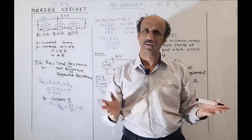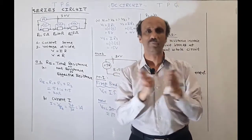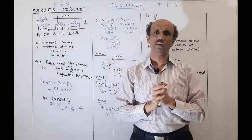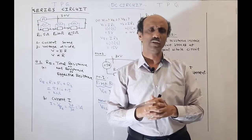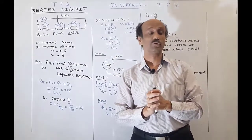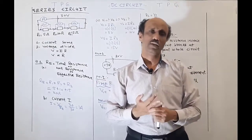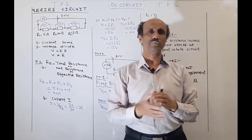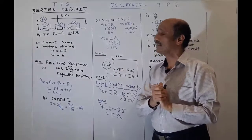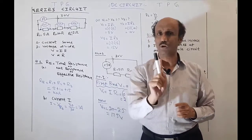A series combination is a combination in which the components are attached one after another. If you switch off any one component, the whole circuit will shut down. For example, the main switch of your home is placed in a series circuit — when you switch off the main switch, the lights of the whole home shut down.